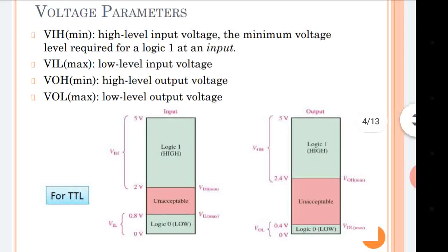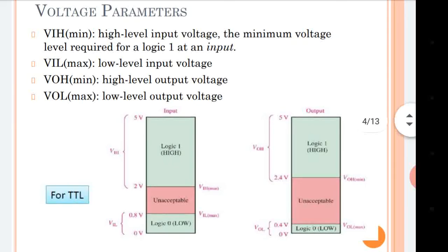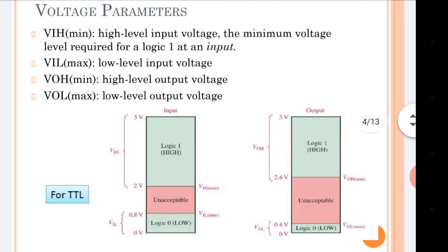For example, if I give 1 volt, it will not be considered as logic 1 because it is in the unacceptable range. VIL max is the maximum value of the low level input voltage which is considered as logic low. If the value is above this, it will not be considered as logic low.